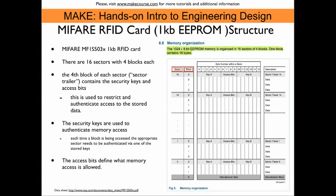This slide shows the structure of the EEPROM memory. We have essentially 16 sectors that each have four blocks of data, and each block has 16 bytes on it, giving us in total one kilobyte of memory on the chip. Each fourth block of each sector — marked gray here — contains security keys and access bits. One can individually block access to certain blocks and also require security information before access is granted.